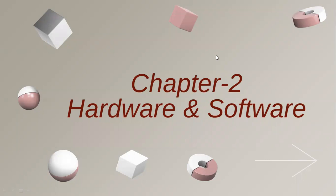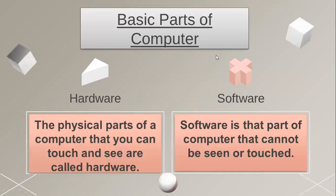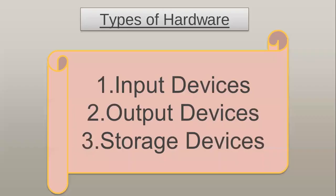Good morning, dear students. As we discussed this chapter on hardware and software, we covered the basic parts of a computer. The physical parts we can touch and see are hardware, and the parts we cannot touch are software. Hardware is further divided into three categories: input devices, output devices, and storage devices.